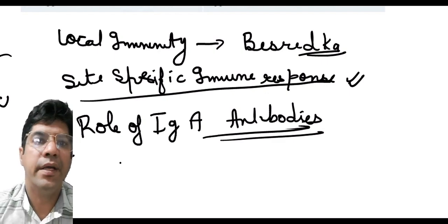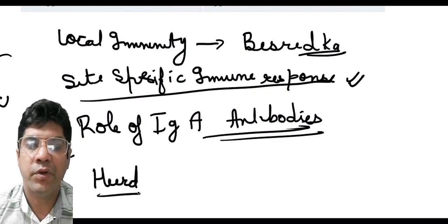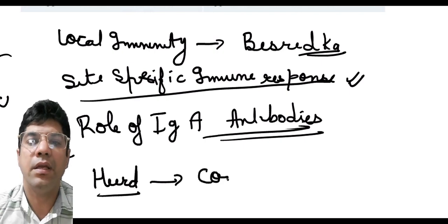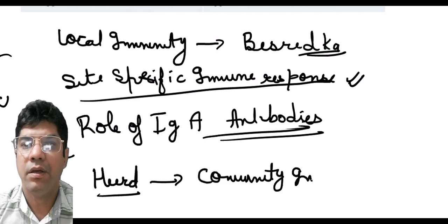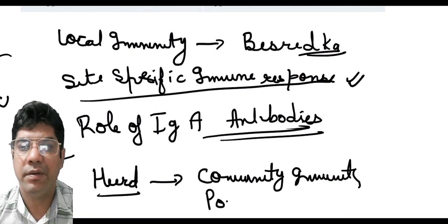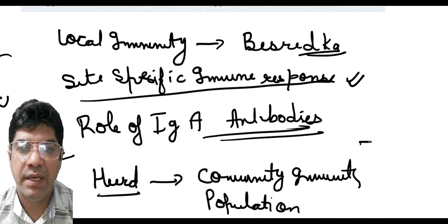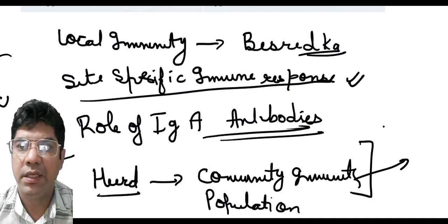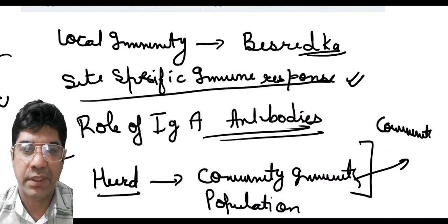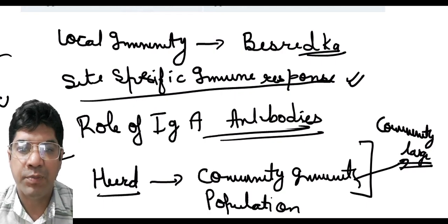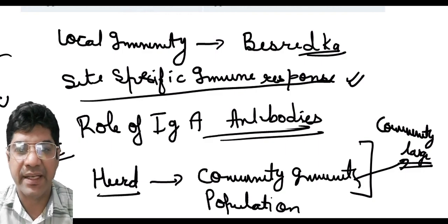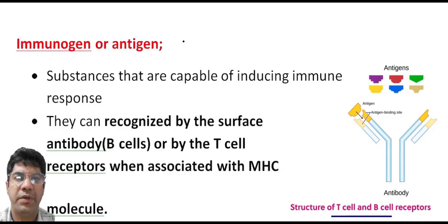Herd immunity is also known as community immunity or population immunity. It refers to the overall level of immunity within a community or population. It occurs when a large proportion of individuals in a community become immune to a particular pathogen like a virus or bacteria.